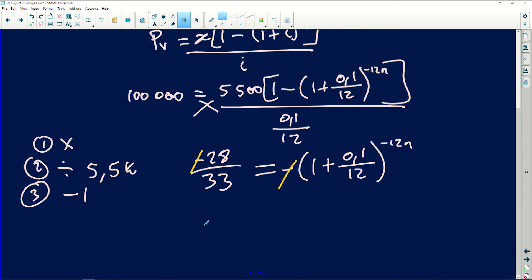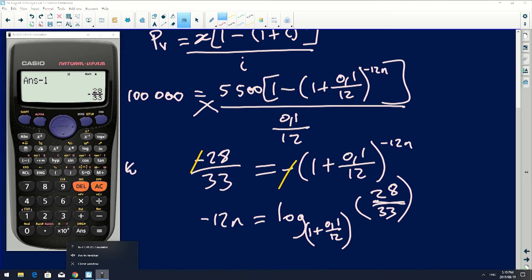And then lastly, you introduce the log. So the 12n is equals to the log of the base is 1 plus 0.1 divided by 12 to the 28 over 33. And this is a positive. So please, that's not a negative. Therefore, this will then be, remember I said we introduced a log.